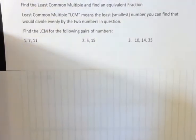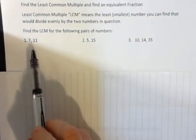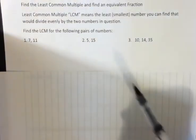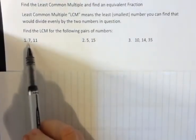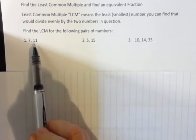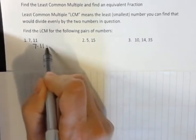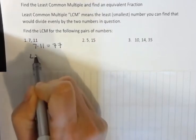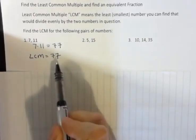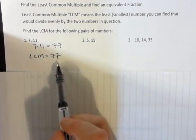So find the LCM for the following pairs of numbers. What we want to find is the least number that seven and eleven would both divide evenly into, and we can see that seven and eleven are both prime numbers. They have nothing in common. Sometimes to find the LCM, you just multiply the two numbers together. So if I say seven times eleven is seventy-seven, then the LCM is seventy-seven. Seven goes evenly into seventy-seven, and eleven divides evenly into seventy-seven as well.